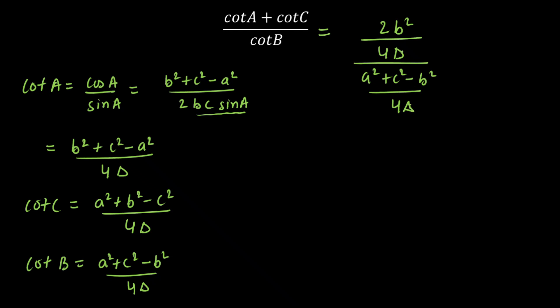So here, 4 delta and 4 delta will clearly cancel out. The remaining value will be equal to 2b² upon a² + c² - b². Now once you put the value here, you'll get this as 32 divided by 16. Because the value of ABC, the sides are given, our answer will be equal to 2. And that's it.